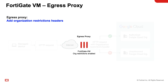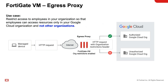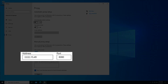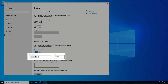For the demo in this video, you'll see restricted access applied to an employee so that the employee can only access resources from one Google Cloud organization, but not the other. For the managed device, you must set the FortiGate's public IP address as a proxy server on the client web browser.